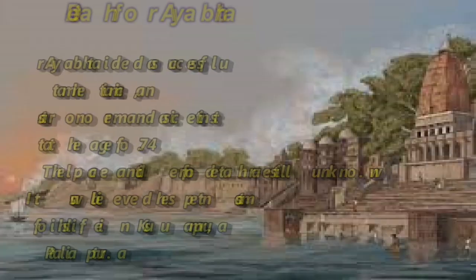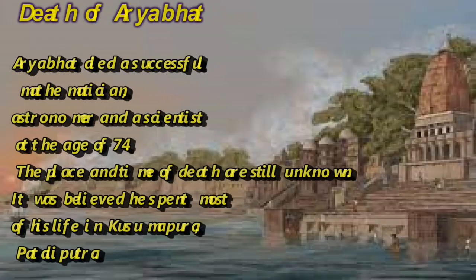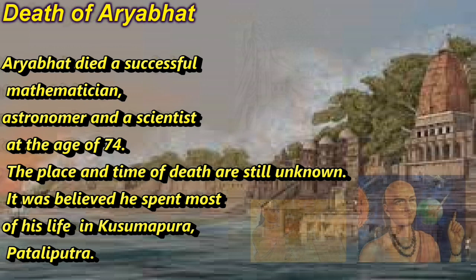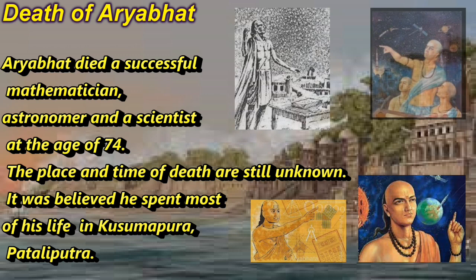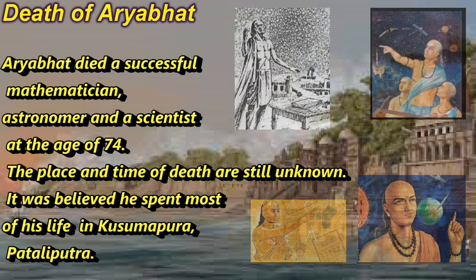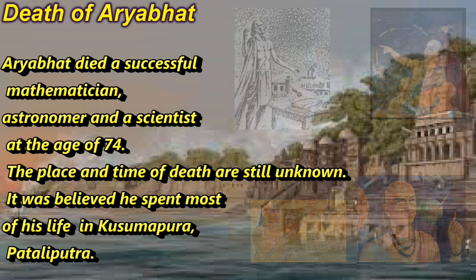Death of Aryabhata. Aryabhata died a successful mathematician, astronomer and a scientist at the age of 74. The place and time of death are still unknown. It was believed he spent most of his life in Kusmapura Patliputra.